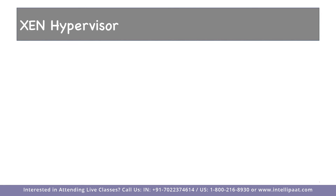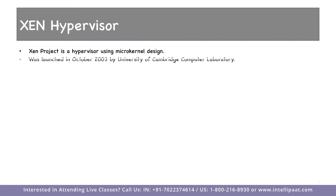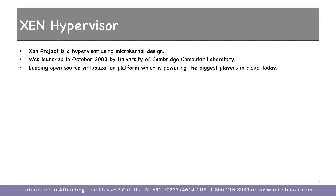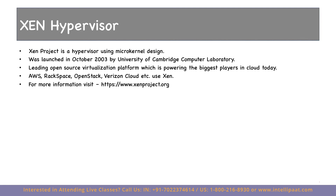The hypervisor used by AWS is called Xen, which is open source. We don't need to know the details of Xen because AWS takes care of everything. Xen was launched in October 2003 by the University of Cambridge. It is the leading open-source virtualization platform used by big cloud players today — AWS, Rackspace, OpenStack, Verizon Cloud, etc. — and AWS is the biggest contributor to the open-source project. You can visit www.xenproject.org for more information. KVM, which stands for Kernel Virtual Machine, is also used as a hypervisor in some cases in AWS.